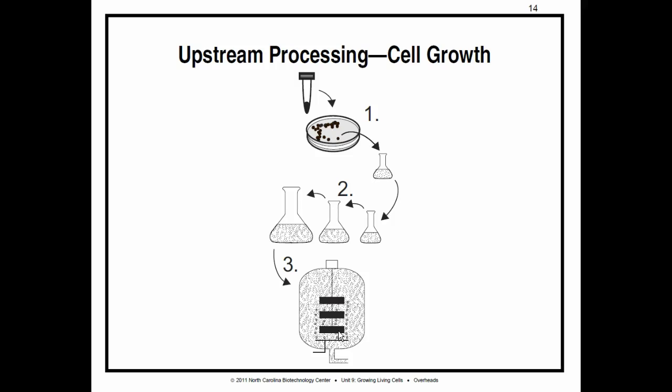As we just learned, production cells have to have the right stuff to make the product in high yield. Scientists in research and development labs select such cell types and characterize them carefully.